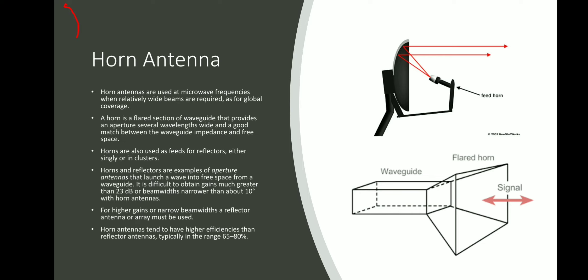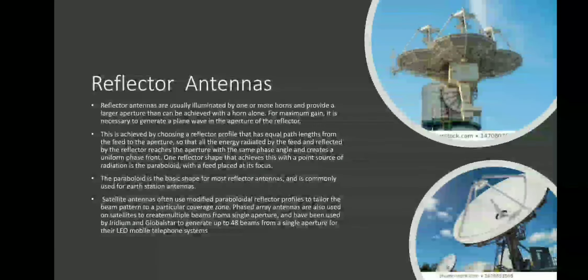There are pros and cons of each antenna. The horn cannot provide gains more than 23 dB or narrow beams, so for spot beam applications we cannot use a horn. For higher gains and narrow beam widths, we use a reflector antenna or an array. Horn antennas tend to have higher efficiencies than reflector antennas, typically in the range of 65 to 80 percent.